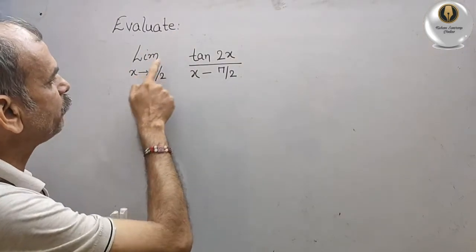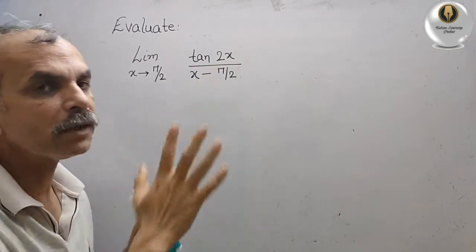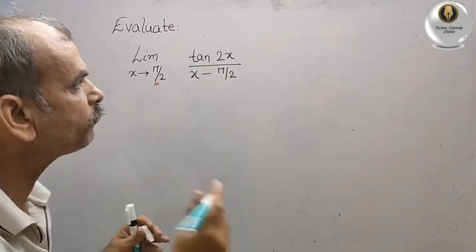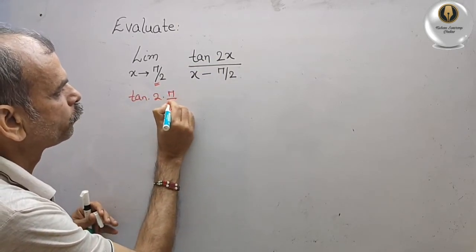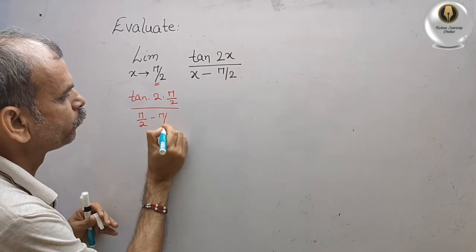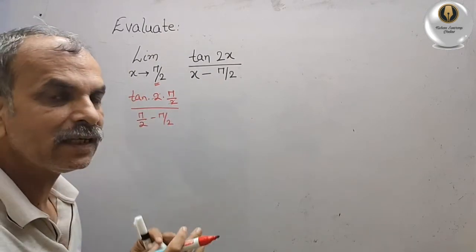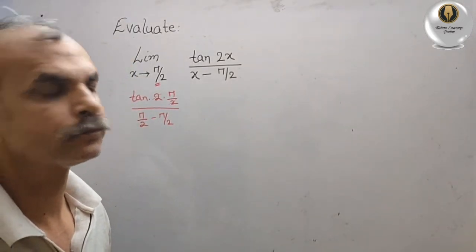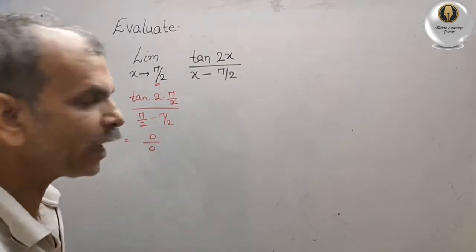The question is to evaluate the limit as x tends to π/2 of tan(2x) / (x - π/2). First, we substitute x = π/2. We get tan(2 × π/2) / (π/2 - π/2). The 2s cancel, giving tan(π) = tan(180°) = 0, and the denominator is also 0. So we get 0/0.